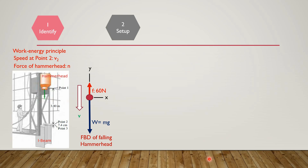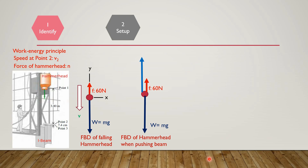We place a dot for the hammerhead when it is touching the I-beam. There are three forces acting on it: first, the weight toward the center of the earth; second, the frictional force of 60 Newtons; and third, the normal reaction N, since there is contact between the hammerhead and the I-beam. This normal reaction is in the upward direction. We attach coordinate axes, and the velocity of the hammerhead is downward — the I-beam is also moving downward.